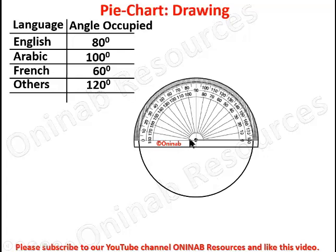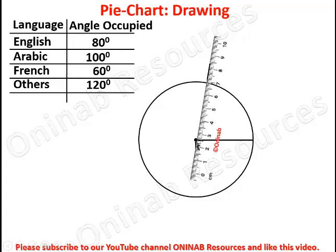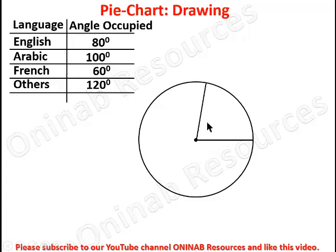We look at the anti-clockwise calibration and read 80 degrees for English. We mark it out, then remove the protractor, place the ruler, and join the center to the circumference of the circle. This gives us the sector for English with an angle of 80 degrees, representing the students who speak English.